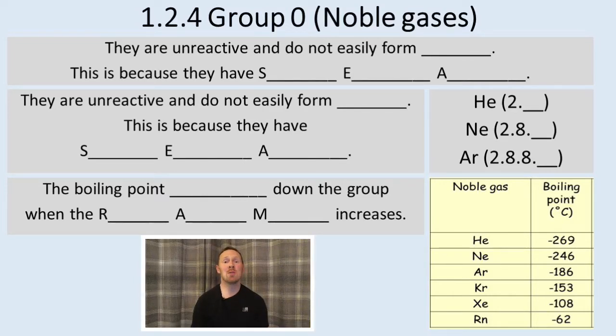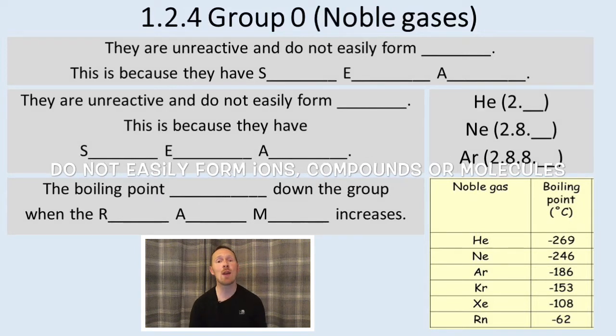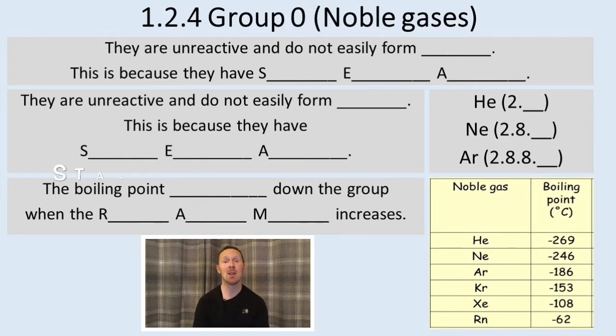So you need to know, Group 0, the noble gases, they are unreactive. The reason they're unreactive is they don't easily form ions or compounds. So they don't react.